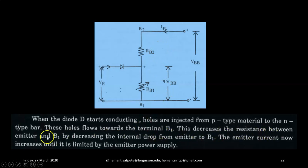So this decreases the resistance between emitter and B1 by decreasing the internal drop from emitter to B1. So the emitter current now increases until it is limited by the emitter power supply. So this is the working.